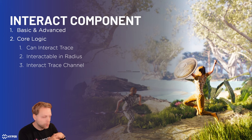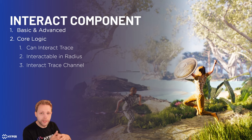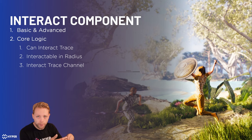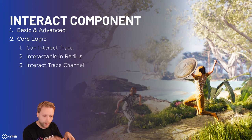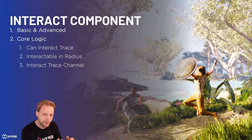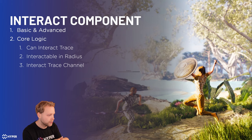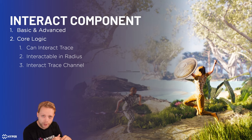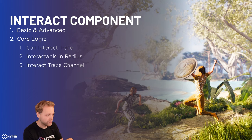Let's check out the interaction components. The interaction components are the core of all the logic behind the interaction itself. They use the interfaces, but to execute the interface calls we need to do line traces from the player perspective. I have defined a basic and an advanced component. The basic component only implements the interaction trace from the player itself, while the advanced component has extra features — for instance, switching based on different interaction types like grab and toggle, and also defining interactables in radius. The core logic can be defined in three things: the CAN interact trace, the interactables in radius, and the interaction trace channel.